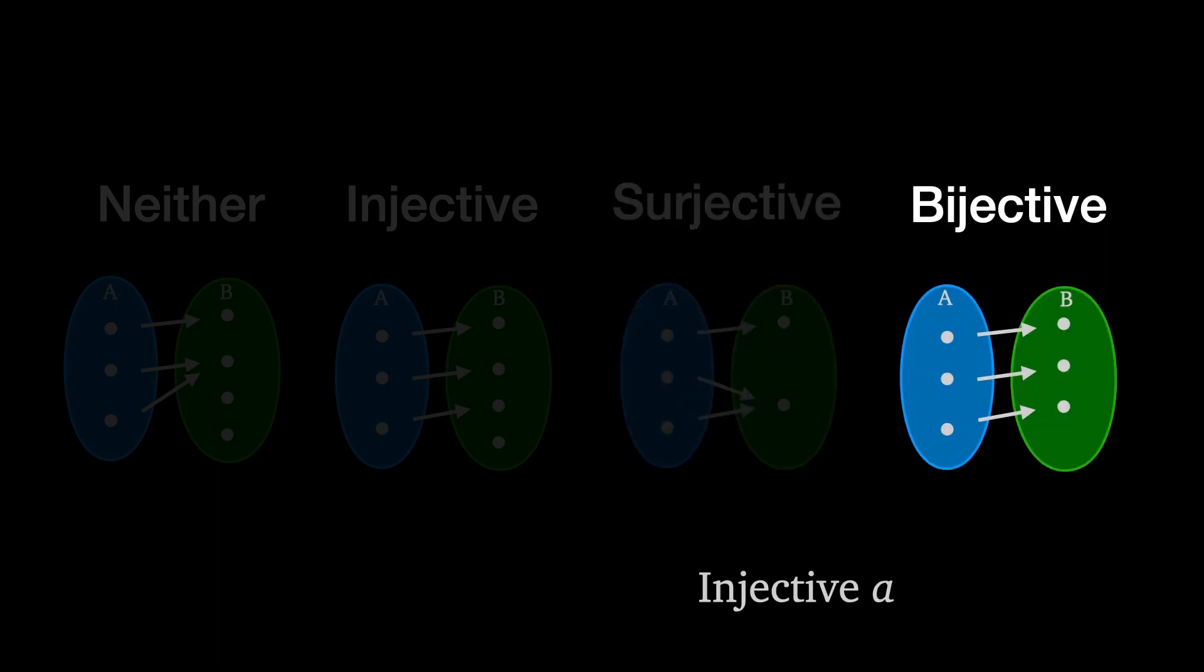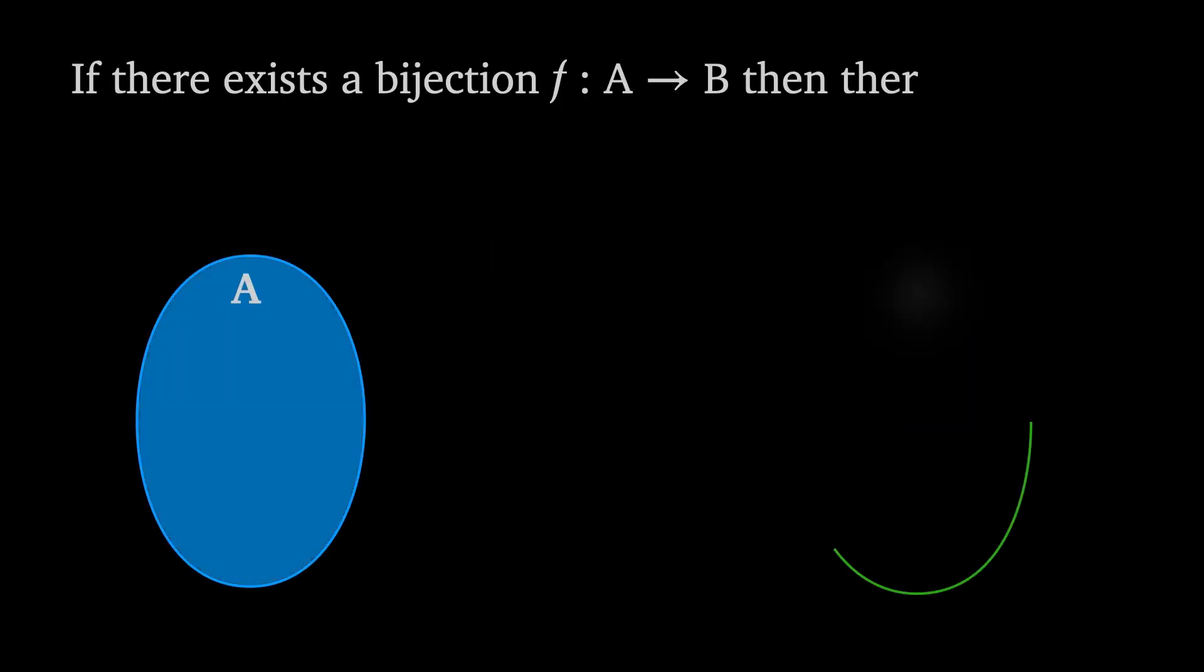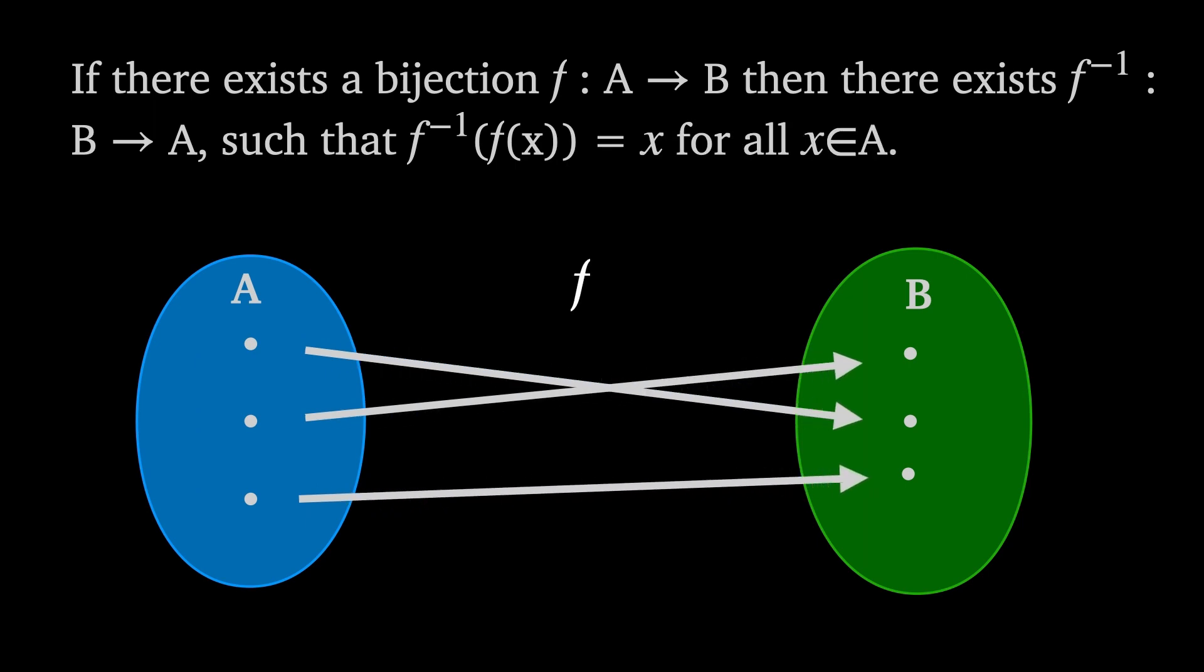A bijective function is both injective and surjective. That is, every element in A is mapped to a unique element in B and every element in B is of the form f(x) for some element in A. The reason we care is because if a function f is bijective, then there exists an inverse function f^(-1), which essentially reverses the function.